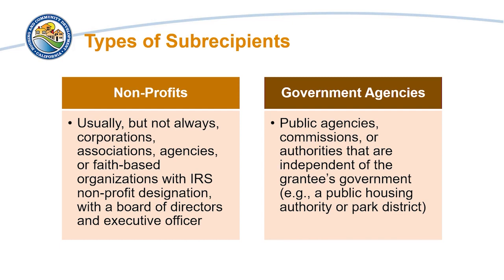Government agencies include public agencies, commissions, or authorities that are independent of the grantee's government. For example, a public housing authority or park district.